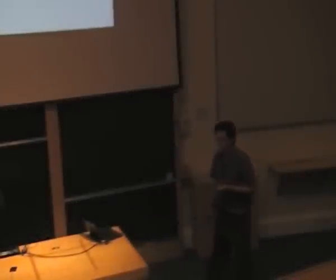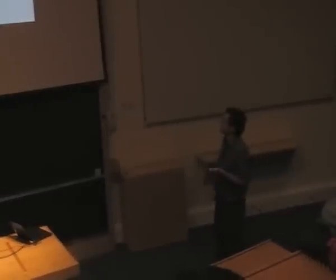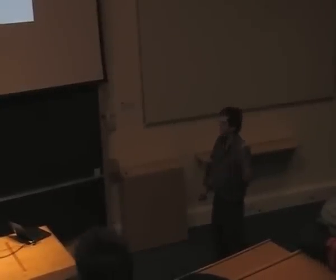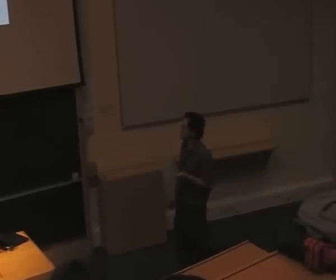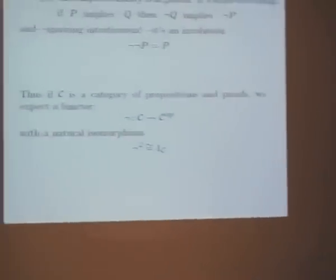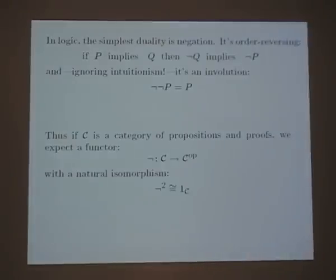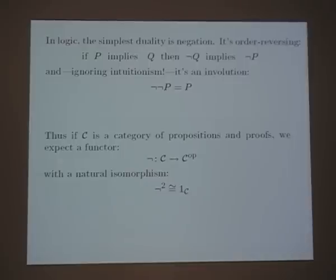At least in non-intuitionistic logic, if you have a category where the objects are propositions and the morphisms are proofs going from one proposition as assumption to another as conclusion, you often expect a functor from that category to the opposite — an order-reversing operation — with the property that doing it twice gives something naturally isomorphic to the identity.